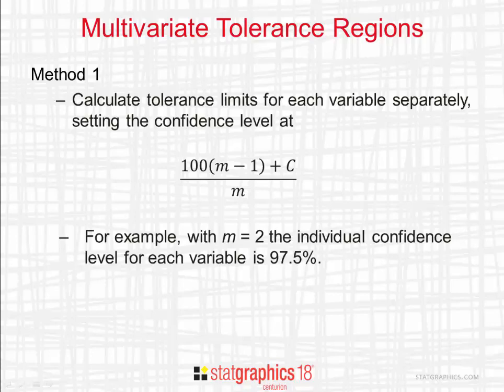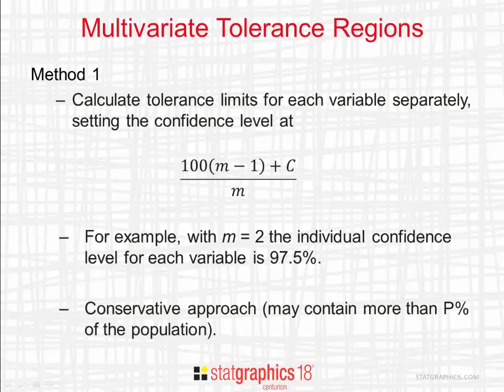For example, if m equals 2, the individual tolerance intervals are calculated using a confidence level of 97.5%. This is a Bonferroni type of approach. With two variables, we'd set the individual confidence levels for each tolerance limit to 97.5%. Although each of the limits might be incorrect 2.5% of the time, together they'd bound at least p% of the multivariate population with at least 95% confidence. This is a conservative approach because, taken together, the tolerance limits may contain more than p% of the multivariate population.